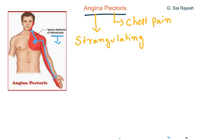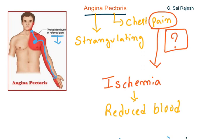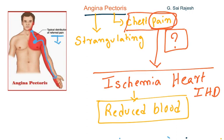Now we need to understand why this pain occurs — what is happening that causes this pain. The pain is a symptom, and that symptom is because of an underlying disease. That underlying disease in this case is known as ischemia. Ischemia literally means reduced blood supply. This happens to the heart — that means blood supply to the heart is reduced. That is the reason why this is also known as ischemic heart disease. When blood supply to the heart is reduced, it gives a symptom — a pain — and that pain we call angina pectoris.